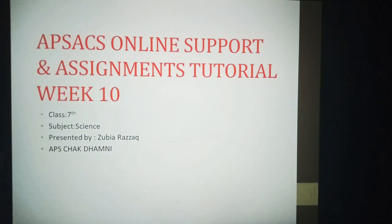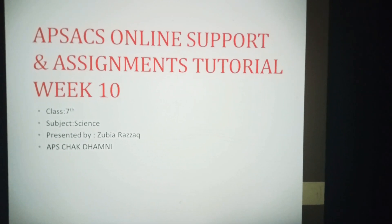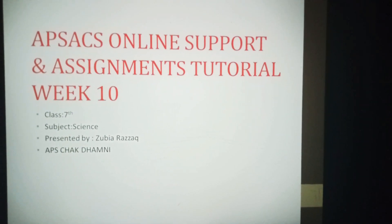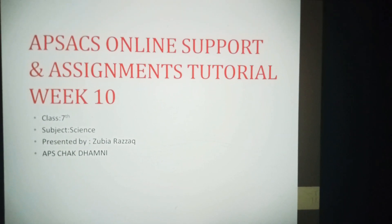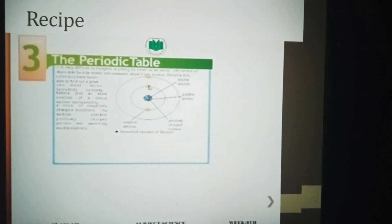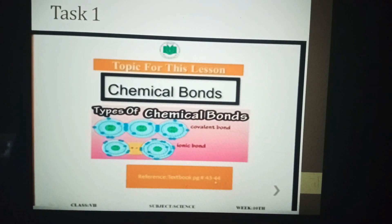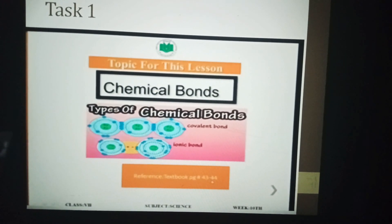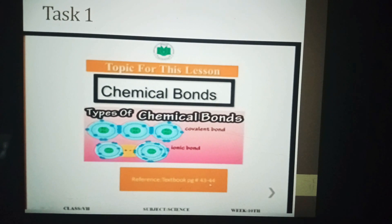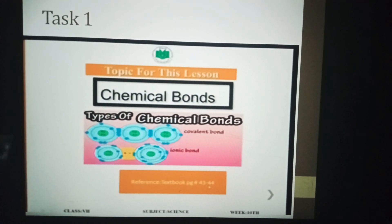Bismillahirrahmanirrahim. I welcome you all in FX Online Support and Assignments tutorial for week 10. I am Zubia Arzak from APH. The grade is seven and the subject is science. This is chapter number three, The Periodic Table. Now it's time to share the Task One topic for this lesson: chemical bonds. I will describe the types of chemical bonds from textbook pages 43 to 44.